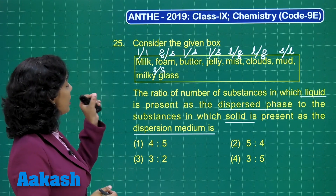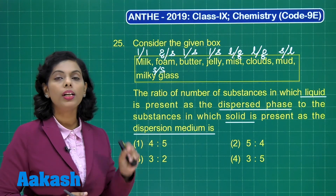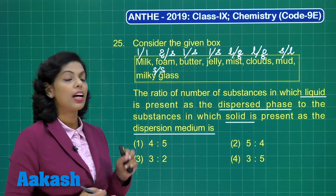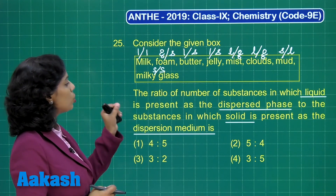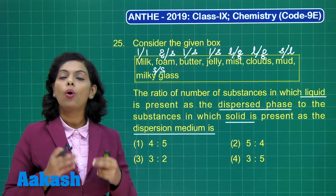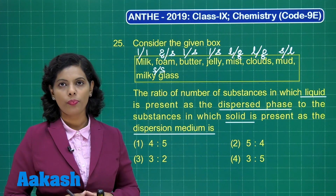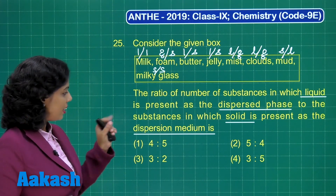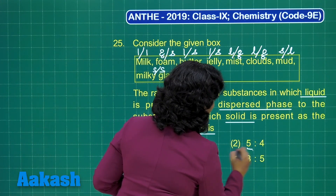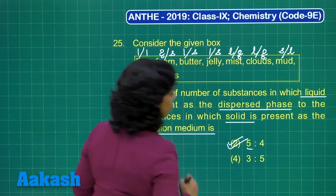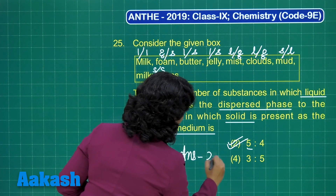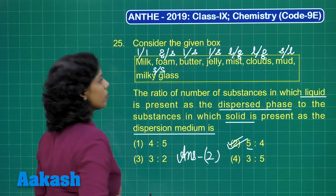If you count, you will identify that the total number of substances in which liquid is present as the dispersed phase is 5. Similarly, the substances in which solid is present as the dispersion medium are 4. So the ratio becomes 5:4, and on the basis of this I choose option 2 as the correct answer.